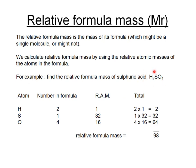You've got to understand what the formula means and what the numbers refer to. H2SO4 means there are two hydrogens, one sulphur, and four oxygens. Each hydrogen has a relative atomic mass of 1, so two hydrogens weigh 2. Each sulphur weighs 32, so one sulphur weighs 32. Each oxygen weighs 16, so four oxygens weigh 64. Adding these together gives a relative formula mass — the mass of one formula of the compound — of 98.